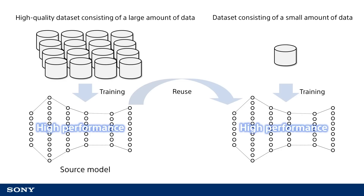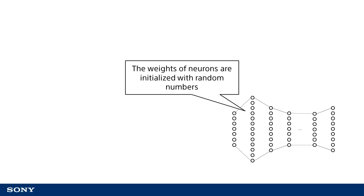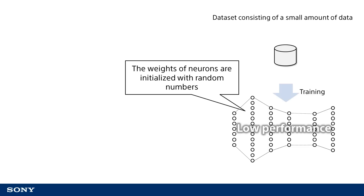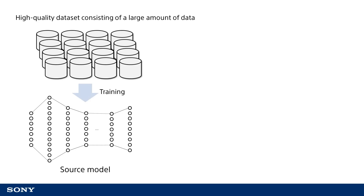Now let's take a look at how to perform the transfer learning process with neural networks. When normally training neural networks without using transfer learning, random numbers are used as the initial values for neuron weights. The weights of neurons initialized with random numbers are then slowly updated during the training process performed using training datasets. In this scenario, training using a small amount of data results in not being able to sufficiently adjust neuron weights and thus insufficient performance. To perform the transfer learning process, we should prepare a neural network model trained with a large amount of data that can handle the same type of input data, which becomes the source model for transfer learning. If working with images, for example, we need a source neural network configured to process images.